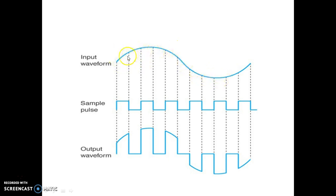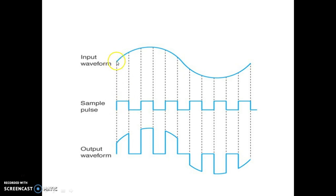Suppose this is the original message signal or input waveform of low frequency. The carrier consists of a high-frequency waveform. In PAM, the carrier frequency is higher than the message frequency. From the output waveform it is quite clear that the amplitude of the carrier pulse varies according to the message signal. When the carrier pulse is high, it follows the input message signal; when the carrier pulse is zero, the output is also zero.